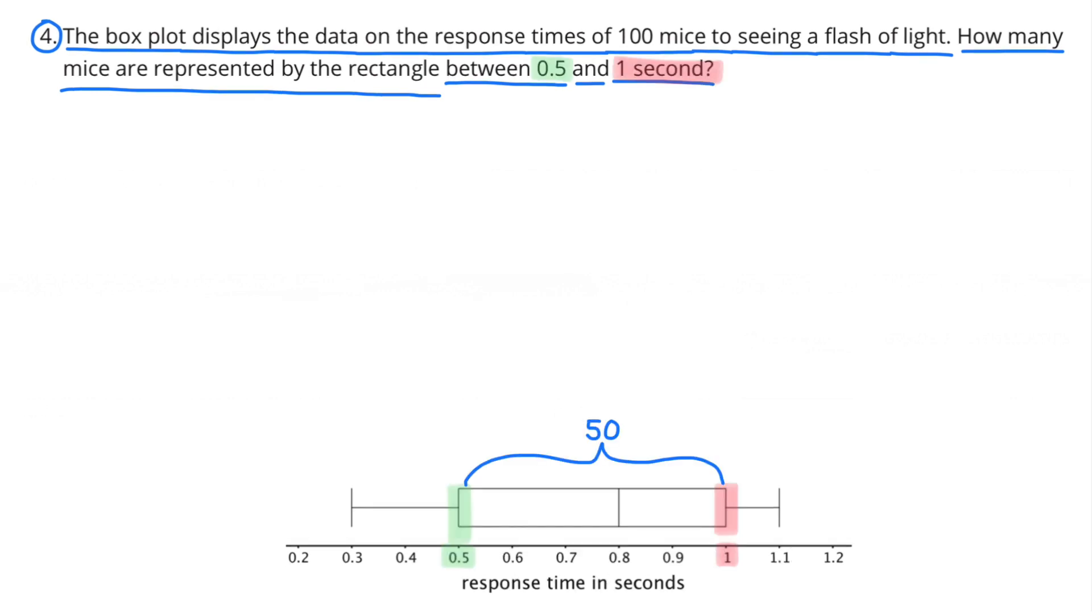Remember, originally there were 100 mice. Here's a look at the number of mice that are between 0.5 and 1 second. Notice 0.5 is at the first quartile and 1 second is at the third quartile. So between the first quartile and the third quartile would be half the amount of mice, and half of 100 is 50.